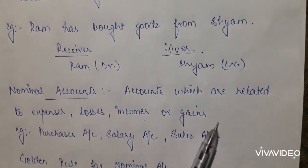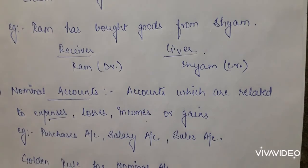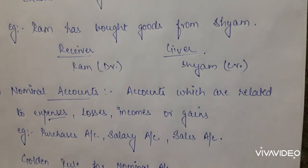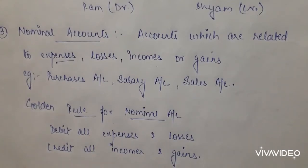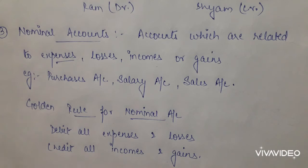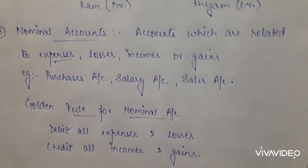Next we come to nominal accounts. Nominal accounts are related to expenses, losses, incomes, or gains. Expenses are amounts spent for business operations; losses and gains are the result of transactions like selling or purchasing goods. Examples include purchase accounts and sales accounts. The golden rule for nominal account is: debit all expenses and losses, and credit all income and gains. Whatever expense you incur or loss you suffer will be debited, and whatever income you receive or gains you earn will be credited.